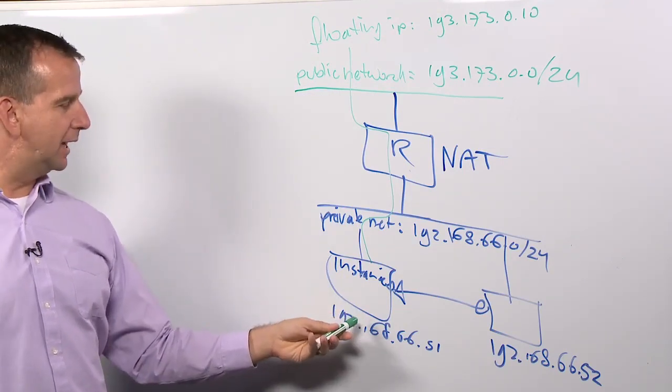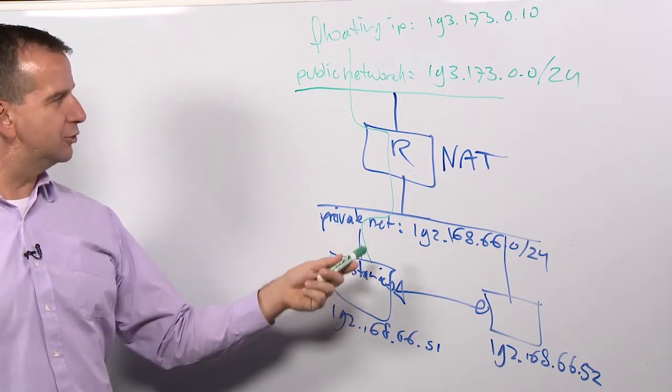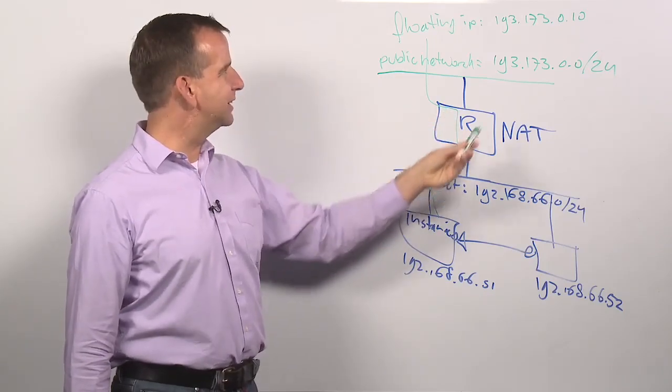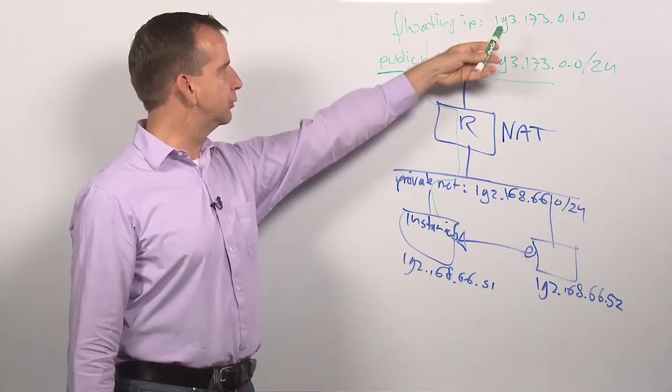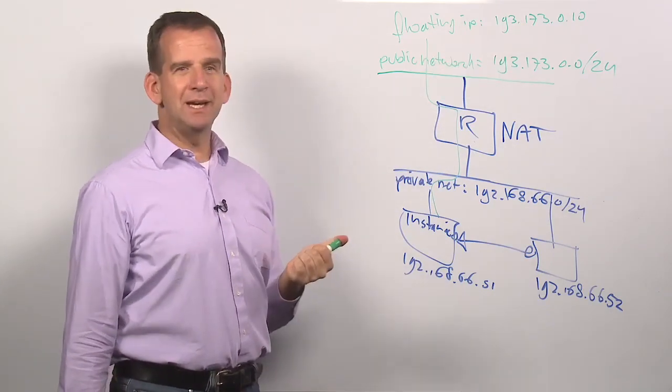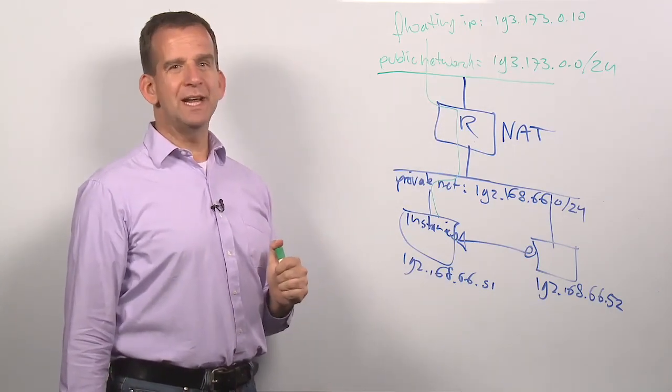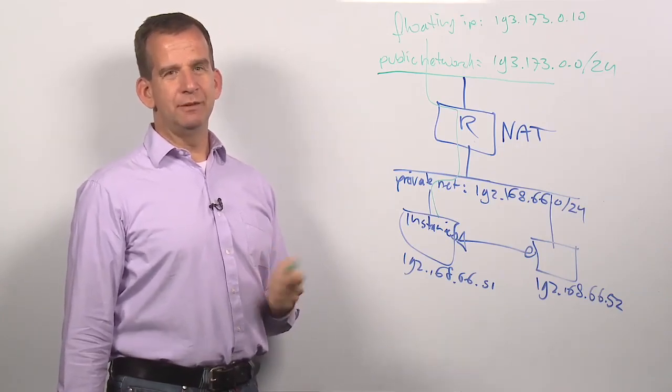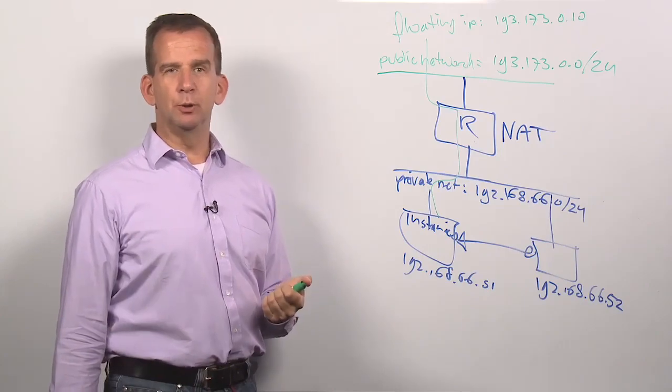When the packets go outside from the instance, the internal IP address as a sender address is translated into the floating IP address. So it's the floating IP address that is making the instance visible on the network. That is why you need to configure both of them if you want your instance to be usable on the internet.